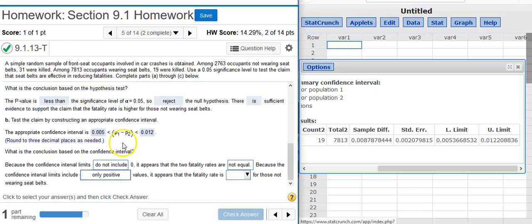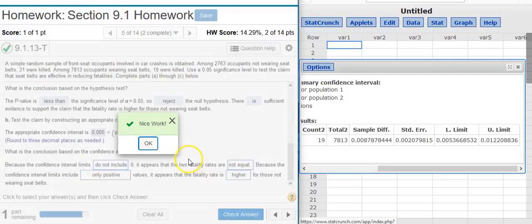Go back and look at what do these correspond to? P1, remember, was the proportion of deaths from people who did not wear the seatbelts. P2 is the proportion of people who died and they were wearing the seatbelts. So wearing the seatbelts leads to lower death, lower numbers of death, lower fatality rate. So the fatality rate is higher for those not wearing the seatbelts. Nice work!